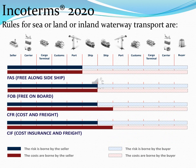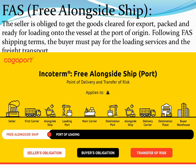Now let's talk about the rules in the second category, which are for sea, land, or inland waterway transportation. These are: FAS or Free Alongside Ship, FOB or Free on Board, CFR or Cost and Freight, and CIF or Cost, Insurance and Freight.